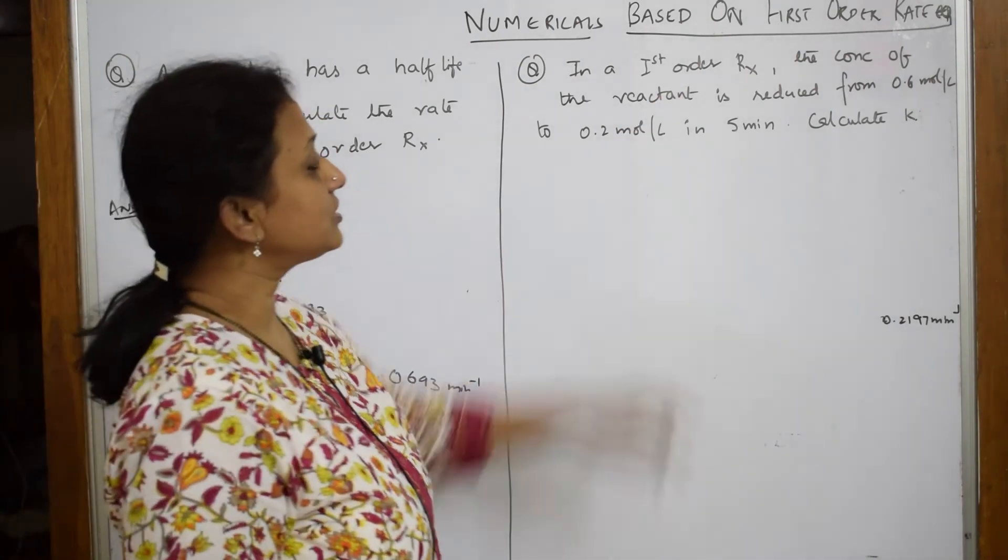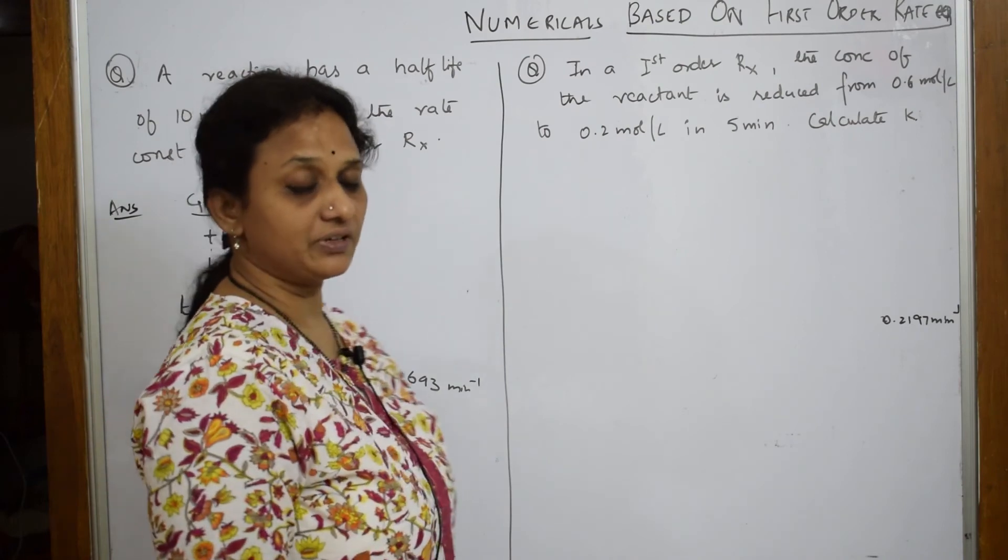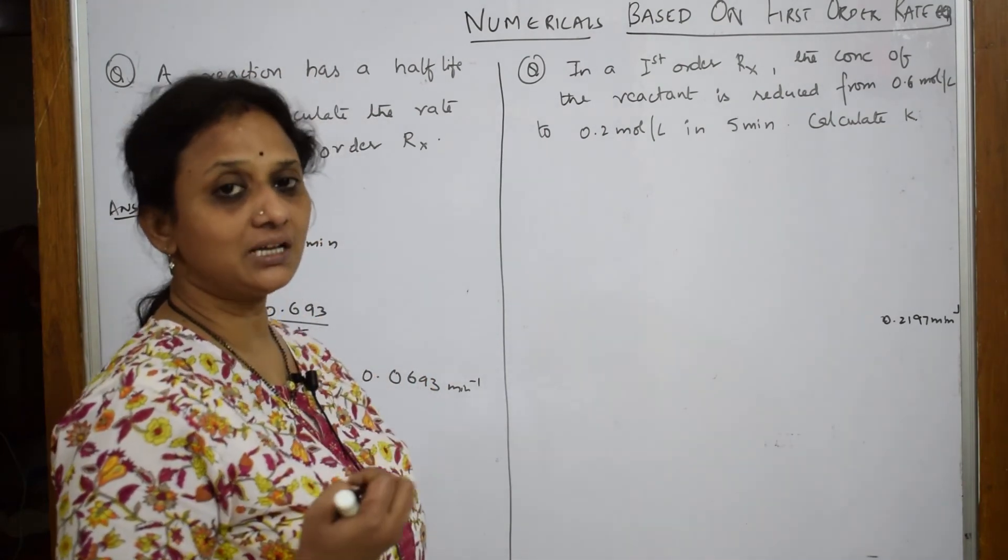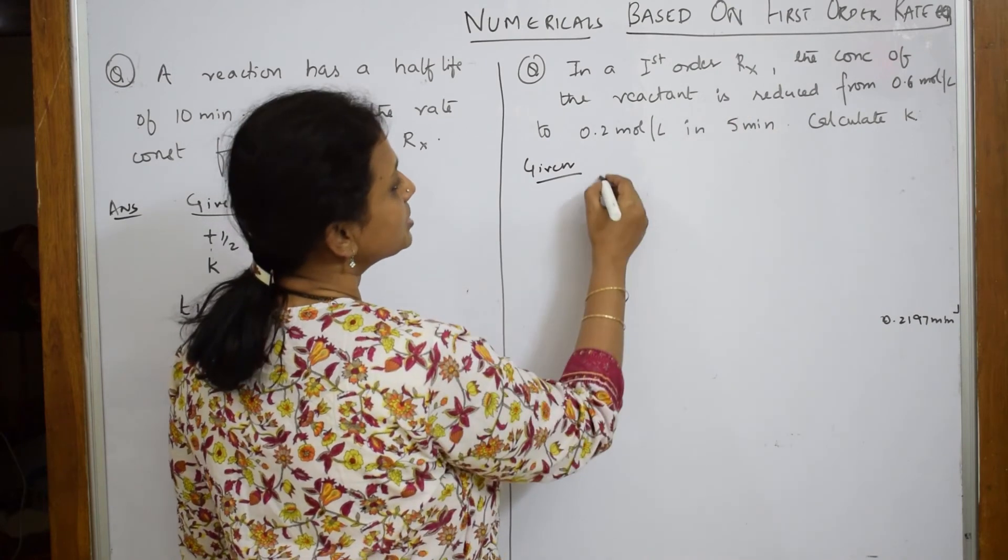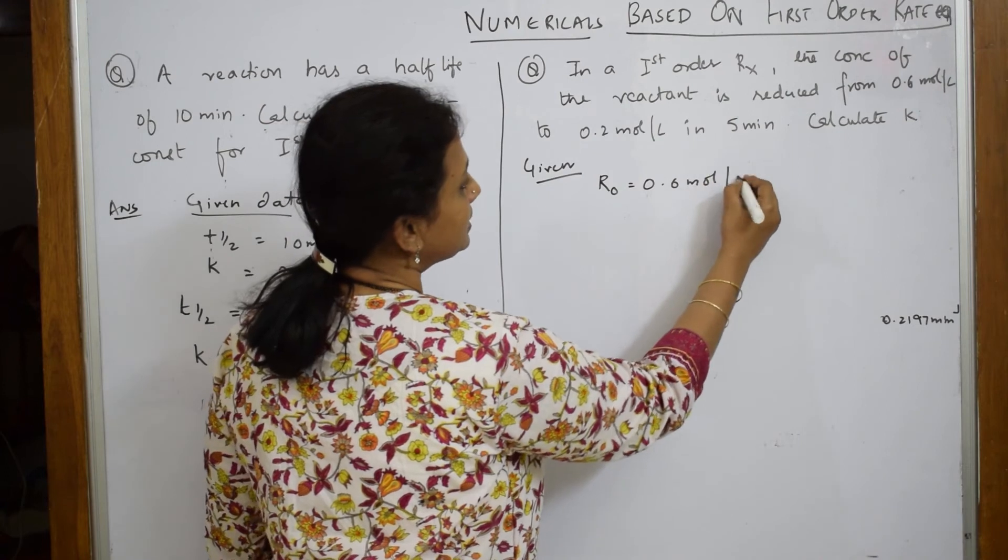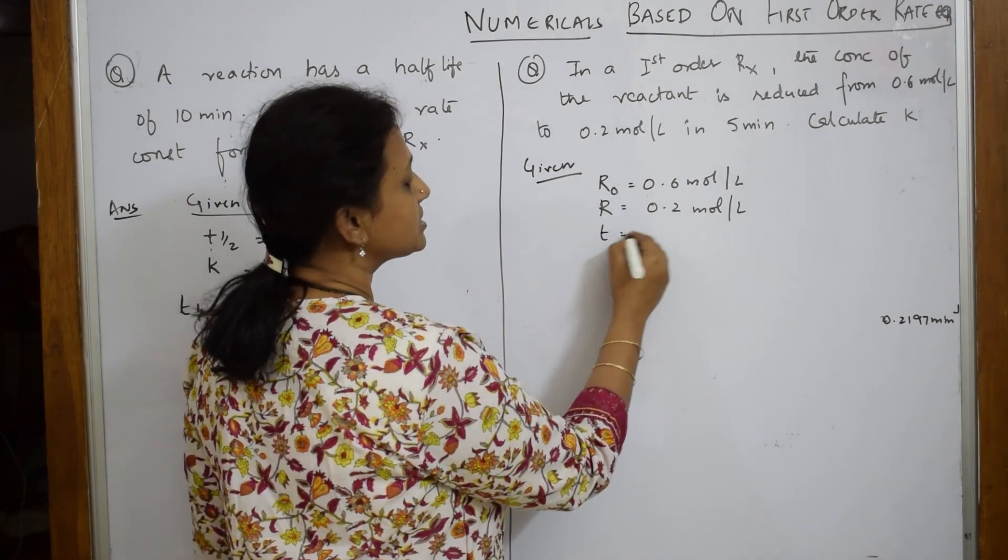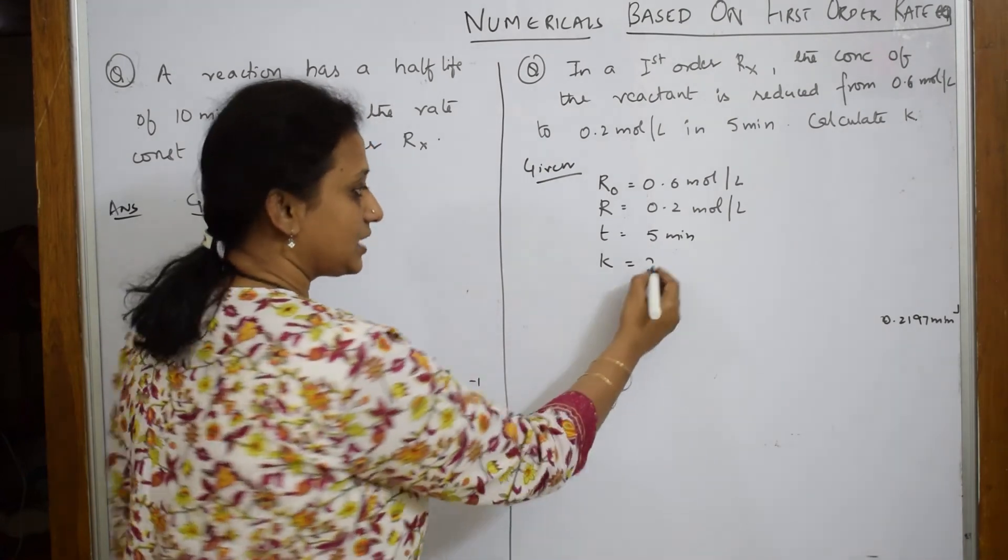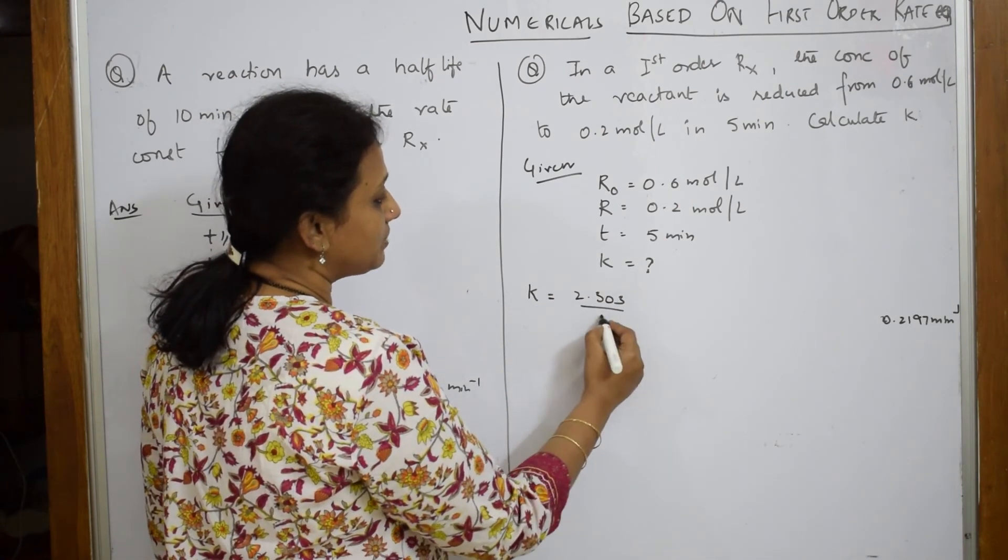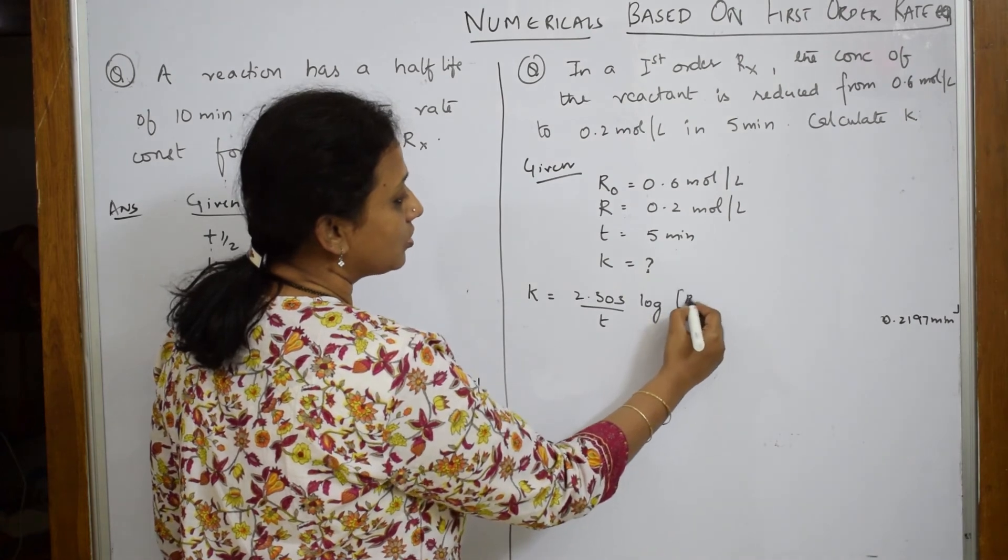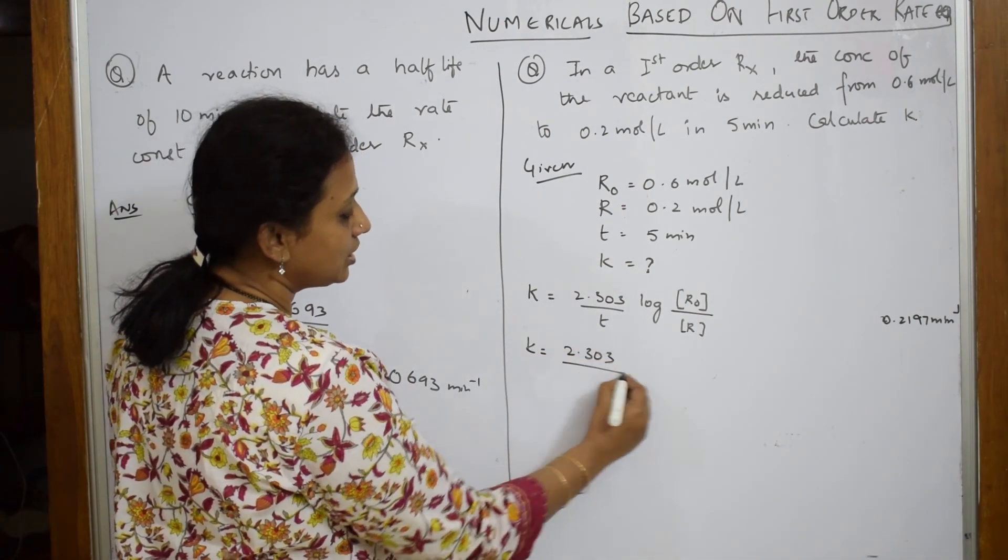In the first-order rate equation, the concentration of the reactant is reduced from 0.6 to 0.2. They have given me r0 by r in 5 minutes. So, given as the concentration was initially r0 0.6 mol per liter, r was 0.2 mol per liter. What is time given? t is equal to 5 minutes. I have to calculate k. Yes, simple. First, write the rate equation. What is first-order rate equation? k is equal to 2.303 by t log r0 by r. Simple. Now substitute the values. k is equal to 2.303 by 5 minutes. Now log 0.6 by 0.2.